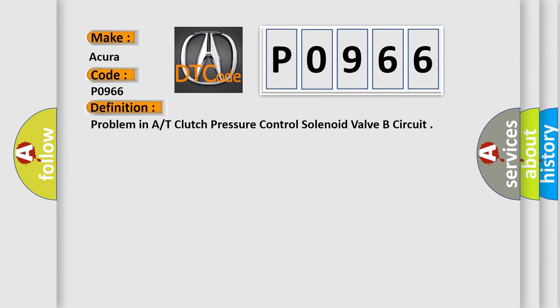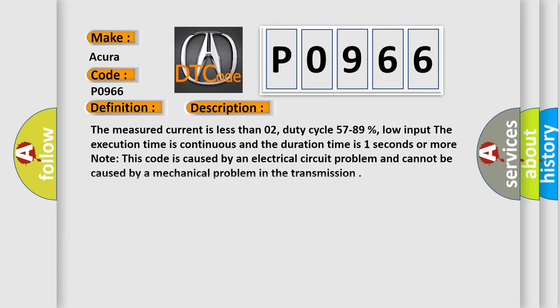The basic definition is: Problem in A/T clutch pressure control solenoid valve B circuit. And now this is a short description of this DTC code: The measured current is less than 0.2A, duty cycle 57 to 89%, low input. The execution time is continuous and the duration time is one second or more.